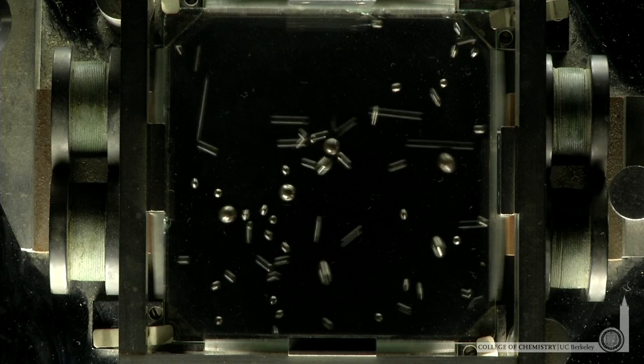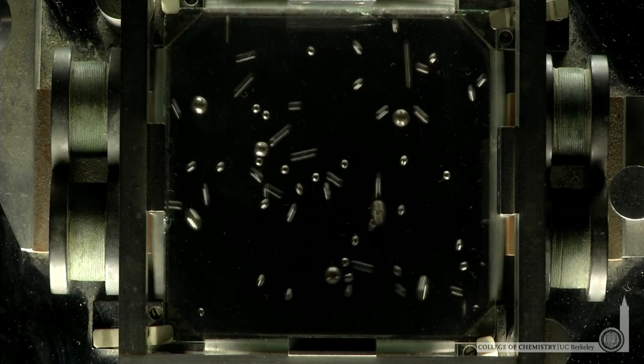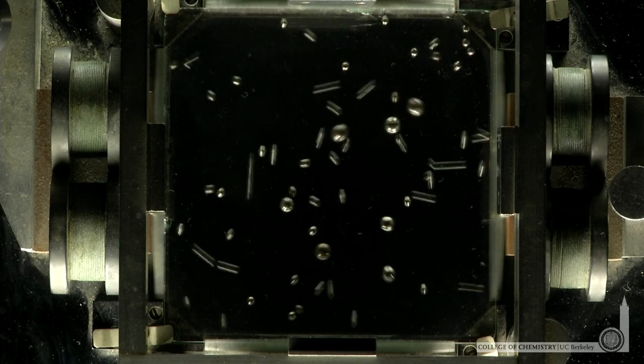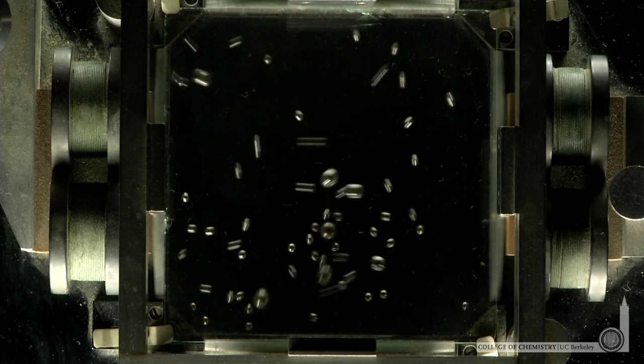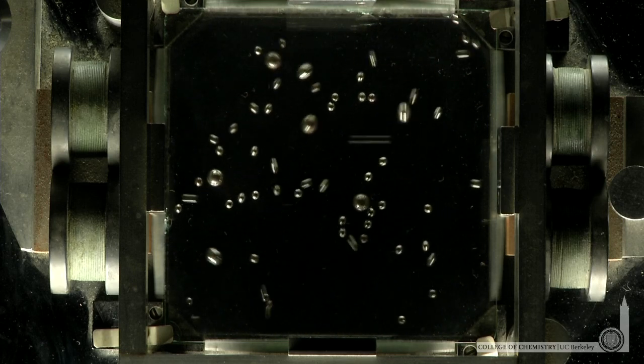But among the more massive balls, that distribution is more narrow. There aren't balls moving very, very rapidly and very, very slowly among the more massive balls.